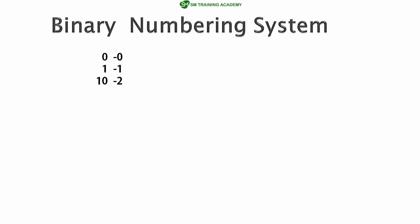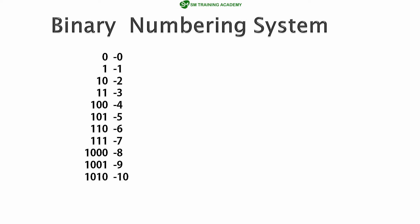In a similar manner, after exceeding the maximum limit of 0 and 1 in binary, for the number 2 we add the prefix 1 to get 10 in binary. So: 3 is 11, 4 is 100, 5 is 101, 6 is 110, 7 is 111, 8 is 1000, 9 is 1001, 10 is 1010, 11 is 1011, 12 is 1100, 13 is 1101, and it goes on like this.